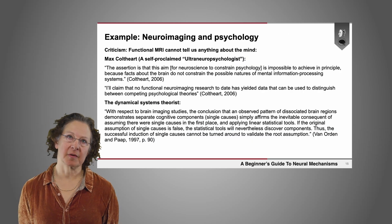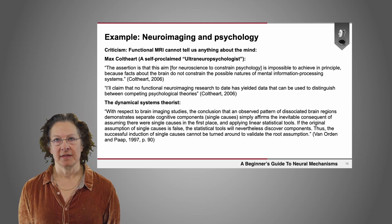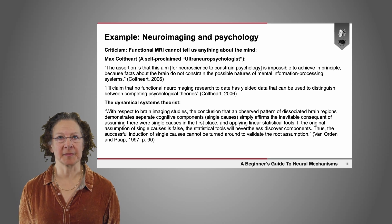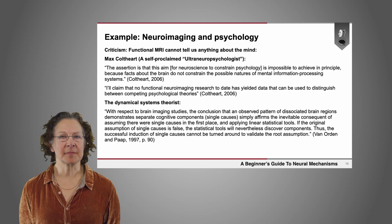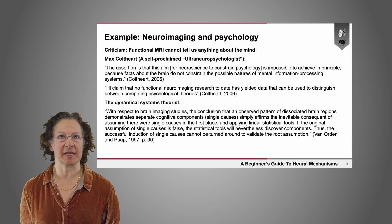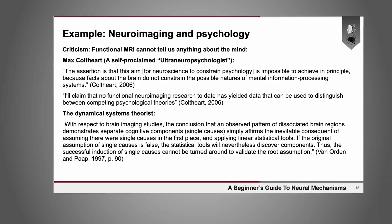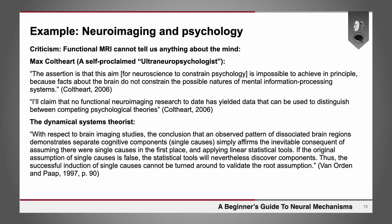I'm going to walk you through one example about the relationship between neuroimaging and psychology. There's been a long-standing criticism of functional neuroimaging coming from psychology. Some people have said that functional MRI cannot tell us anything interesting about the mind. For example, Max Coulthart, who calls himself an ultra-neuropsychologist, says that neuroscience constraining psychology is impossible to achieve in principle because facts about the brain do not constrain the possible natures of mental information processing systems. He challenged that no neuroimaging research to date — as of 2006 when he made this challenge — had yielded data that can be used to distinguish between competing psychological theories.